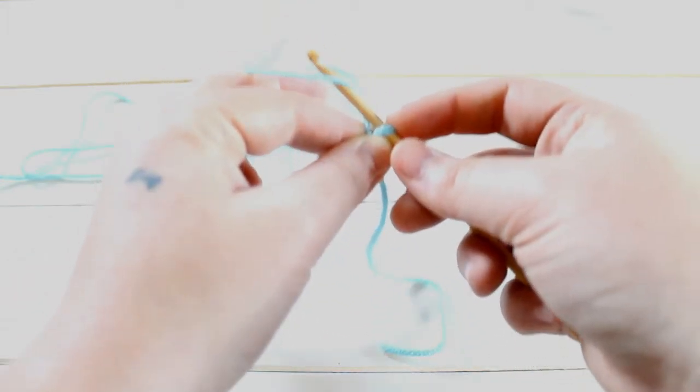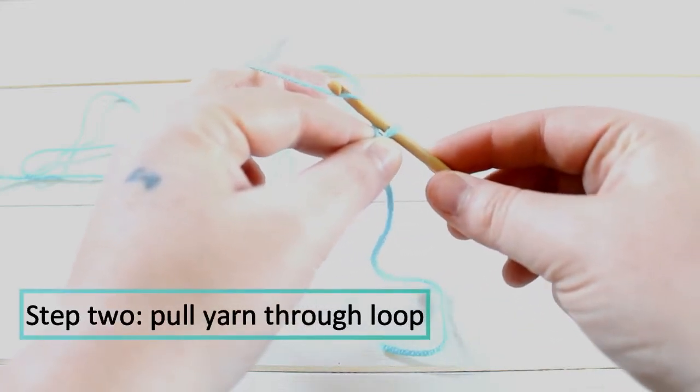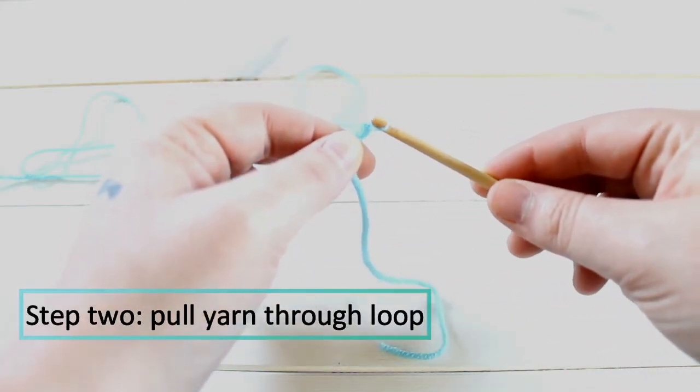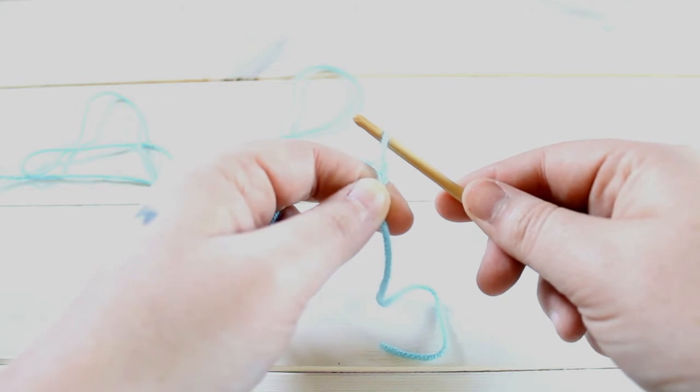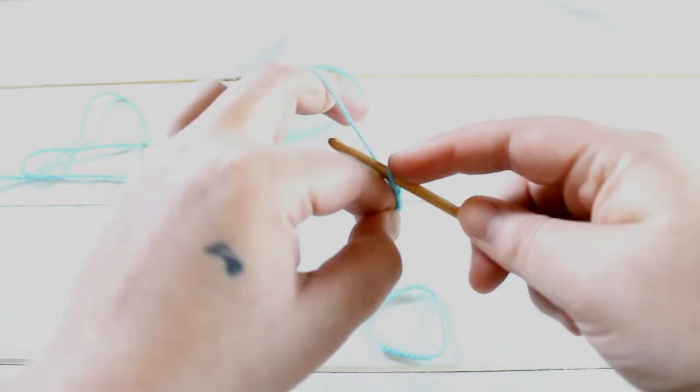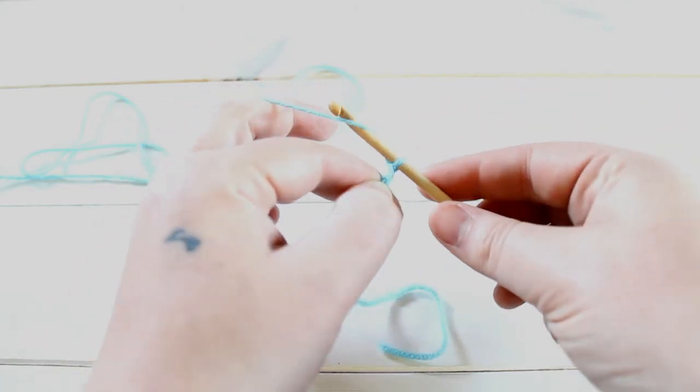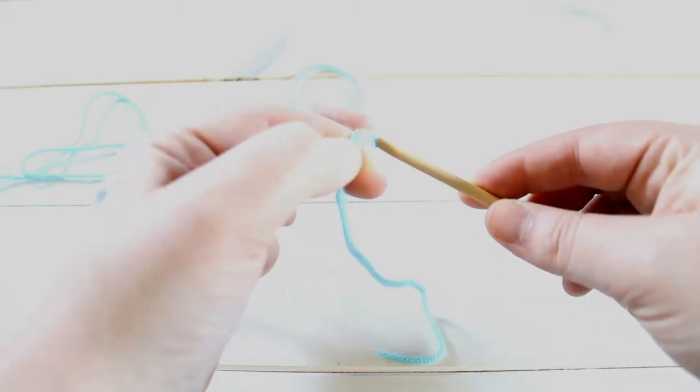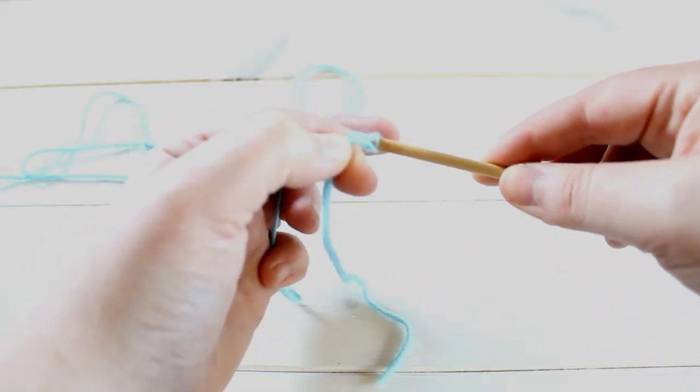And you're just going to grab that yarn and you're going to pull it through the loop. And that's a chain stitch. So again, you're just going to pull the hook through the last loop that you made.